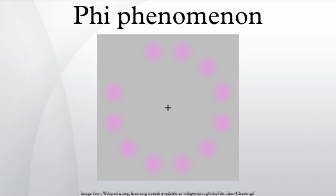If the lag is further prolonged, two forms of partial movement can be perceived: dual movement and singular movement. In dual movement, two lines are perceived that both move, but not in a continuous way. In singular motion, two lines are perceived of which only one is moving.